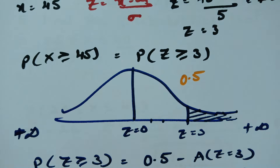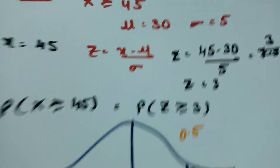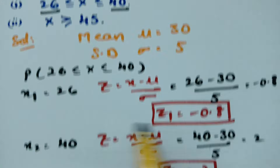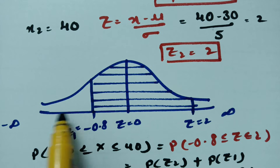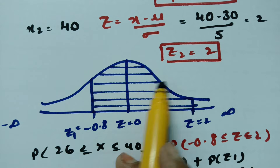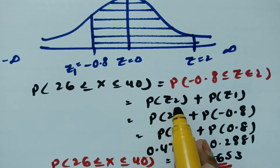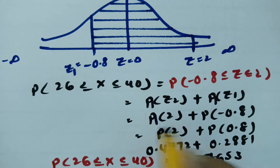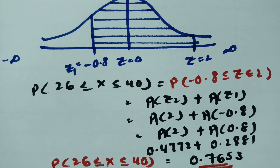To summarise: mean = 30, sigma = 5. For x = 26, z = −0.8; for x = 40, z = 2; for x = 45, z = 3. For the first part, the area is P(z=2) + P(z=0.8) = 0.4772 + 0.2881 = 0.7653. This is how we solve normal distribution probability problems.